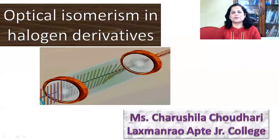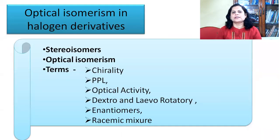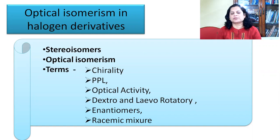Hello students. From the topic of halogen derivatives, we are here with the concept of optical isomerism in halogen derivatives. Optical isomers are one type of stereoisomers. We are going to study about stereoisomers and some concepts related to optical isomerism: chirality, plane polarized light, optical activity, dextro and levorotatory, enantiomers, and racemic mixtures.